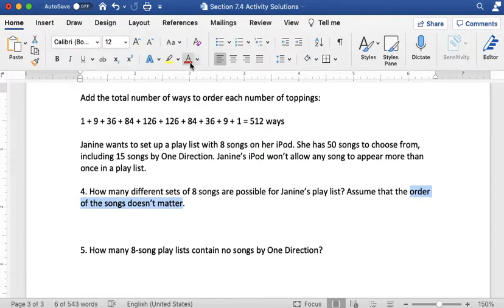If order did matter, then we would use our other method of multiplying how many options I have for my first choice, how many options I have for my second choice, and then go on through. If order doesn't matter, then we use combinations.